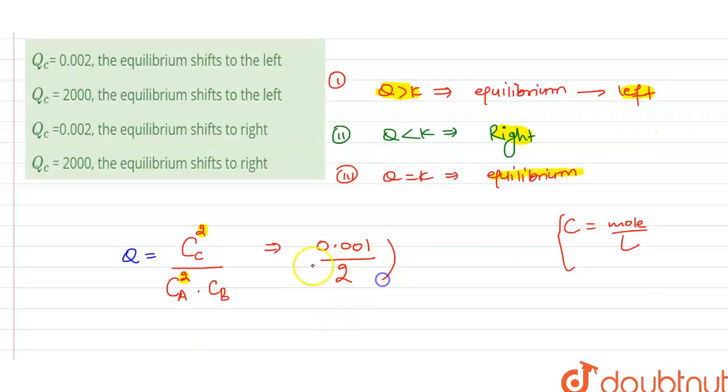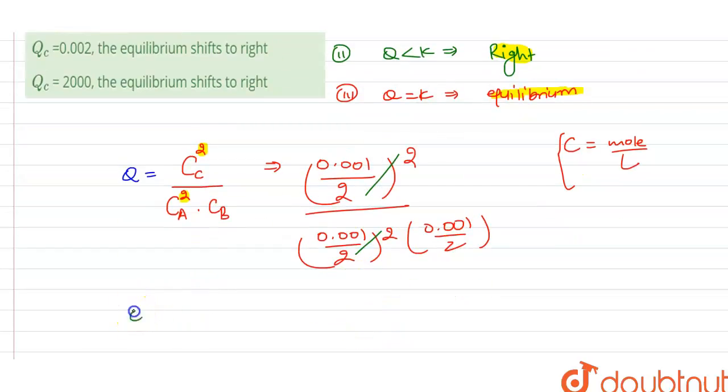It will be 2 mole square. Similarly, we will have the same thing here: 0.001 upon 2 mole square, 0.001 upon 2. Now this got cancelled out and we will get the value of Q as 2 upon 0.001. On solving it, we get Q is equal to 2000.